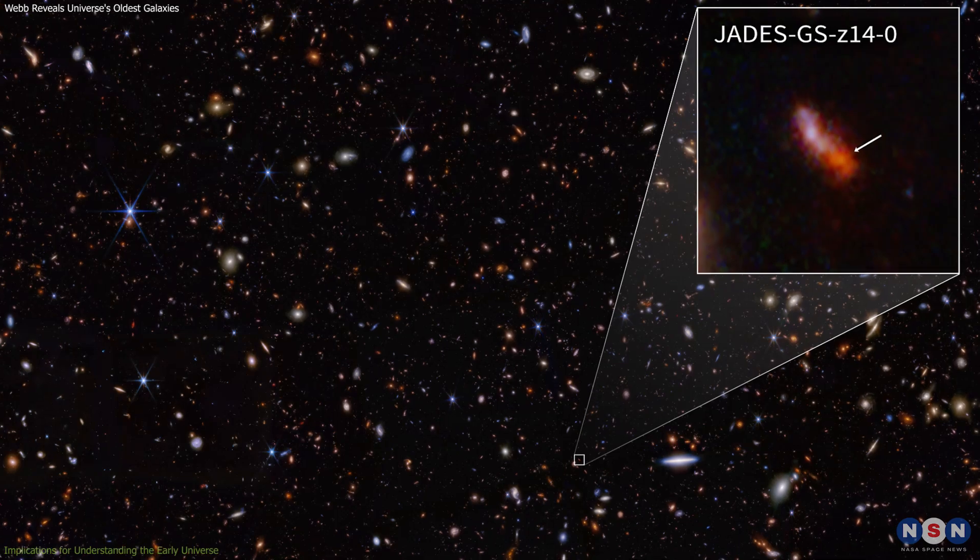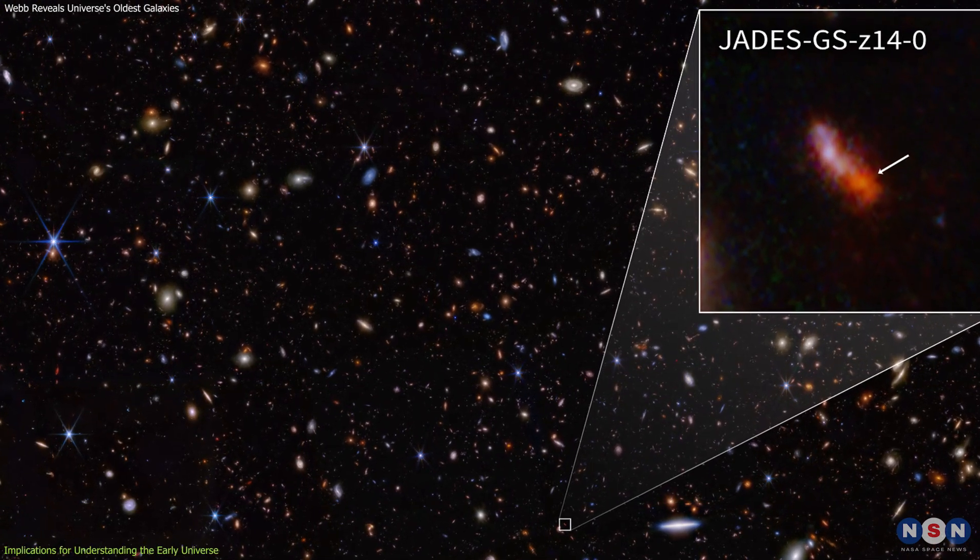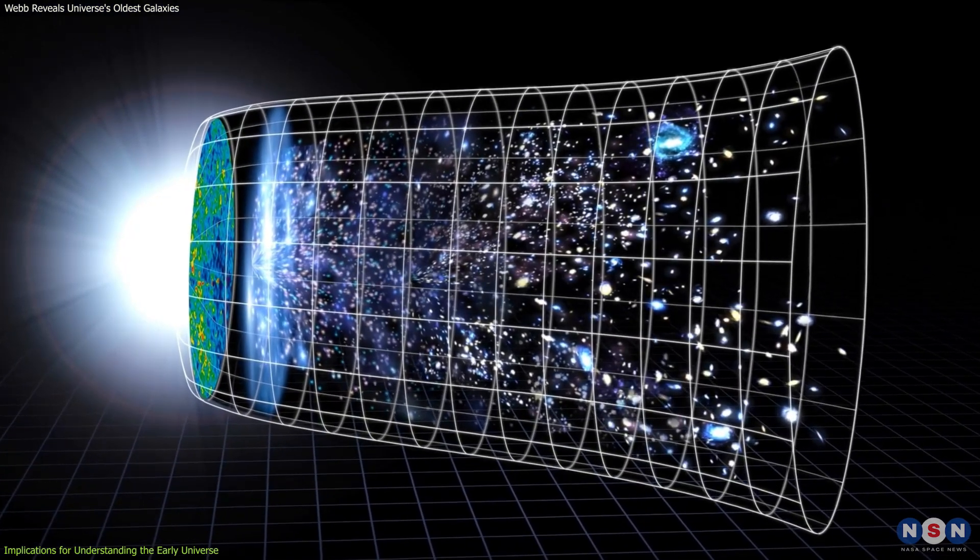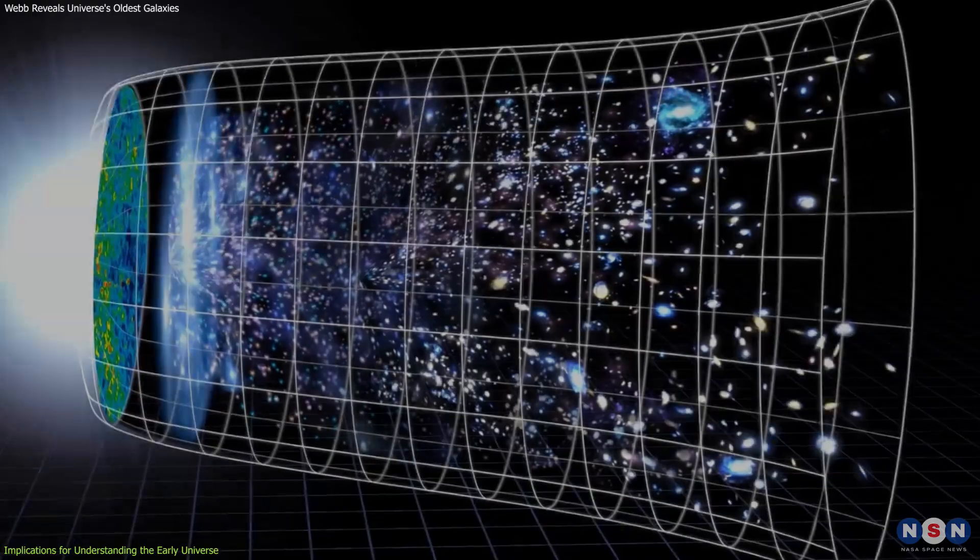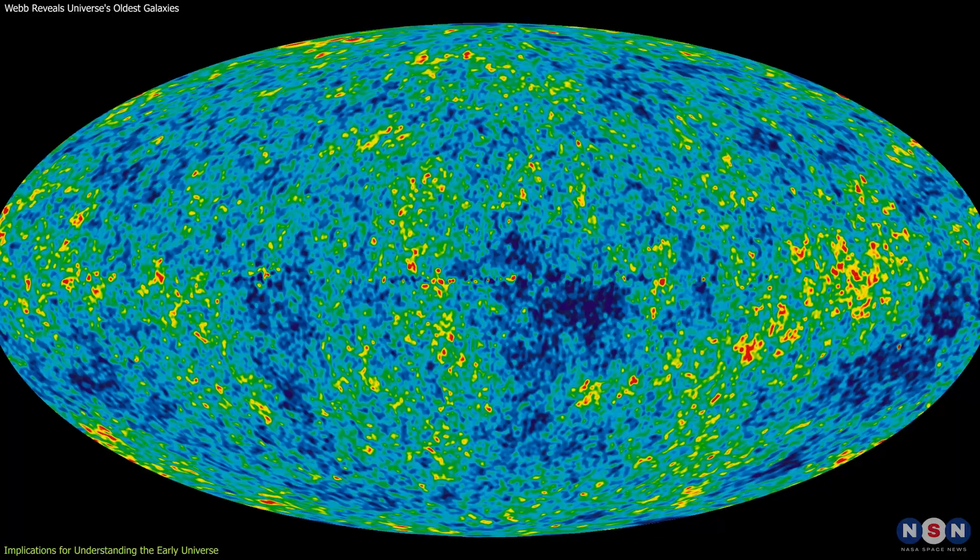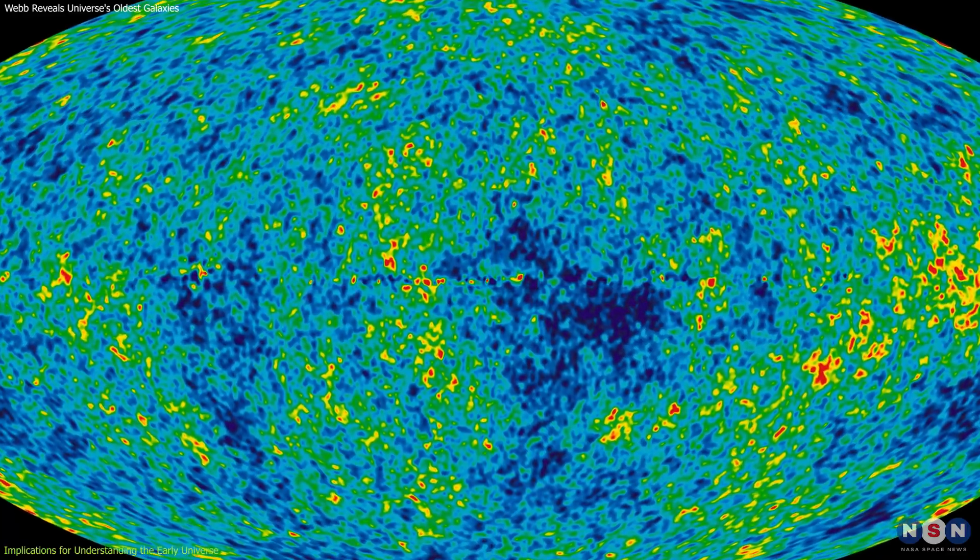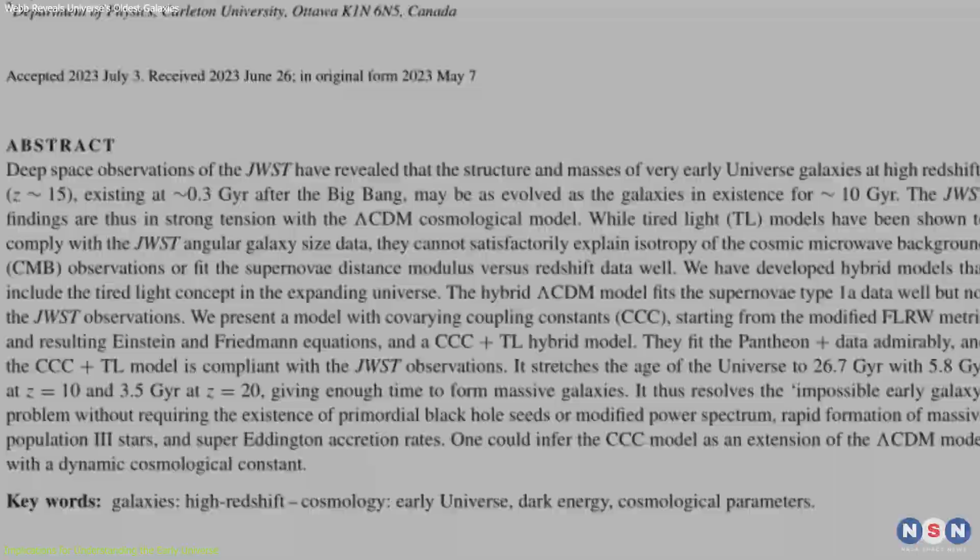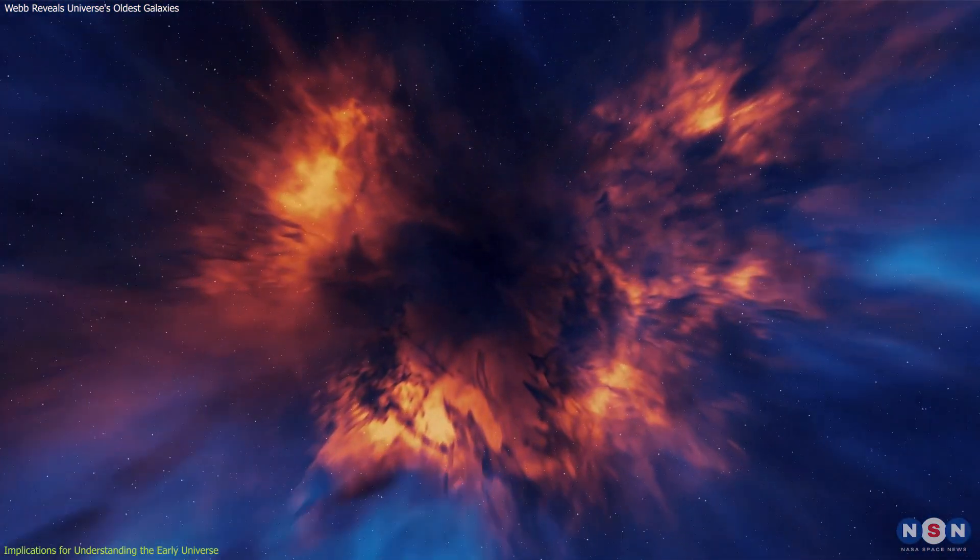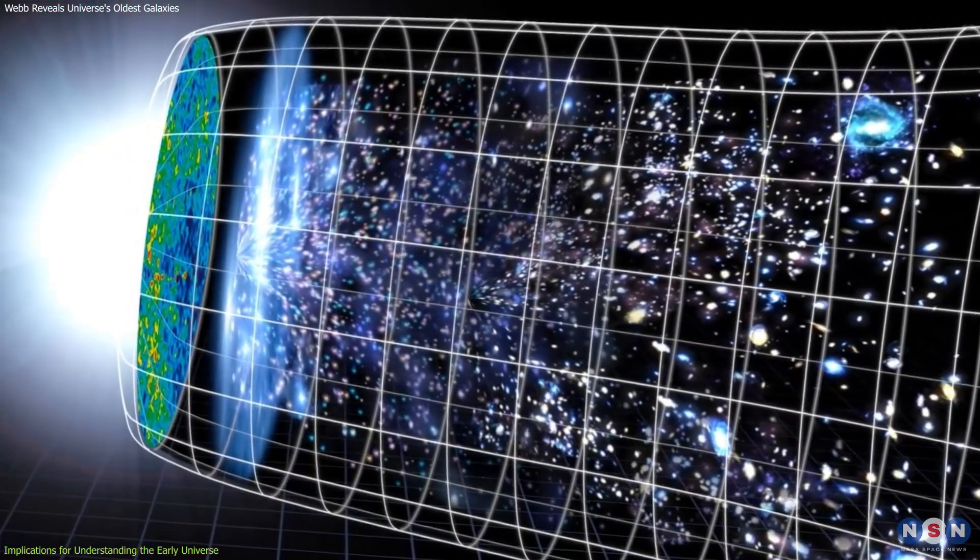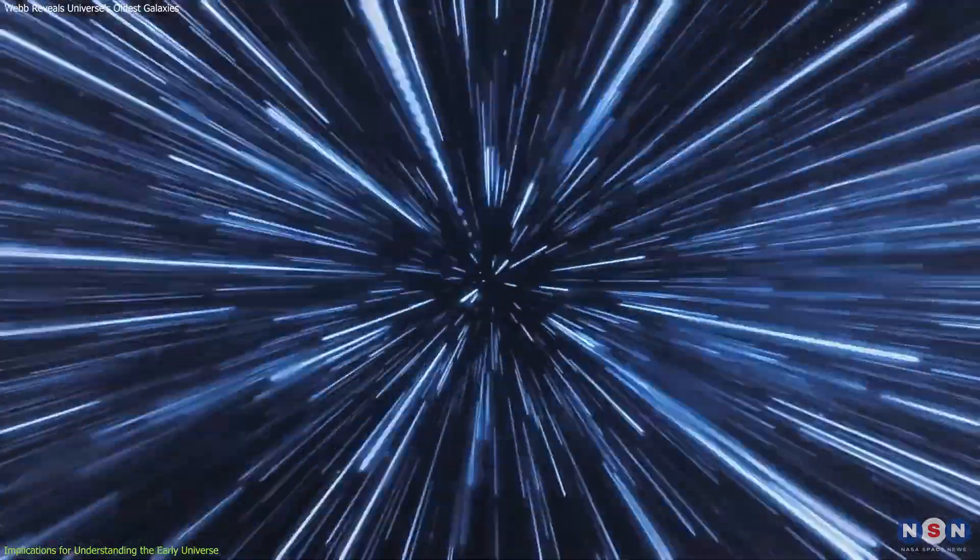The intricate data derived from the extreme redshifts of these two galaxies challenges the conventional timeline of galaxy formation and provides a critical bridge for rethinking cosmological models. The established estimate of the universe being 13.8 billion years old, based on cosmic microwave background (CMB) observations and Hubble's law, is now being questioned. Recent theories, like those proposed by Rajendra Gupta, suggest a much older universe, potentially around 26.7 billion years, which prompts a significant re-evaluation of cosmological assumptions.